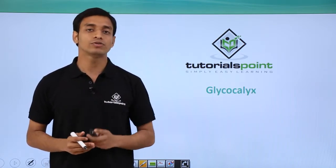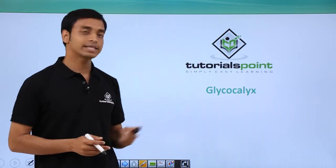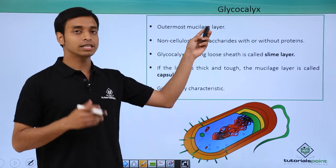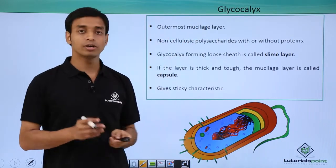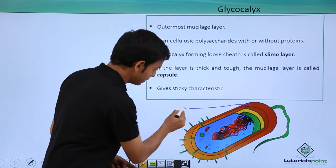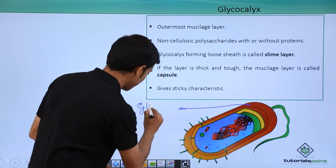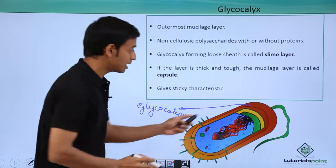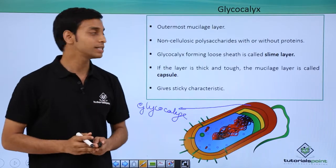The first layer which we are going to discuss is known as glycocalyx. So what is glycocalyx? Glycocalyx is basically the outermost mucilage layer. As we can see in this picture, the reddish layer which we can see, this is the glycocalyx. So this is the outermost layer of a bacterial cell.